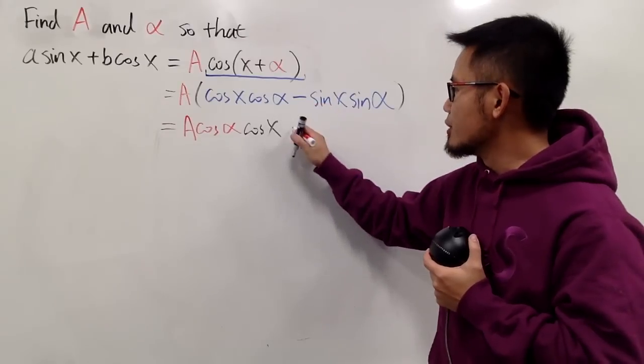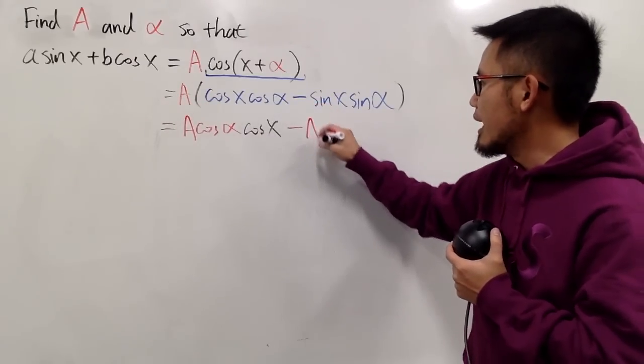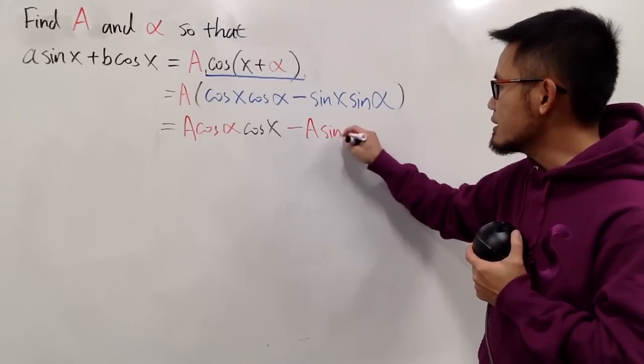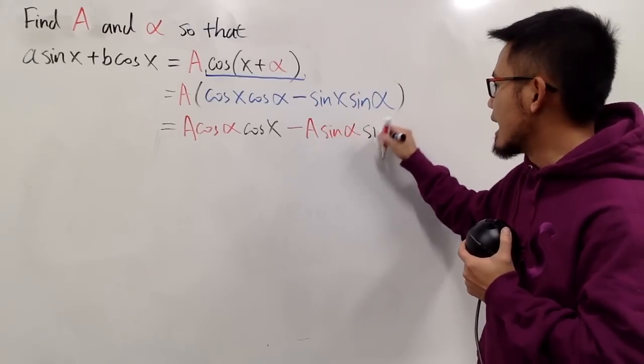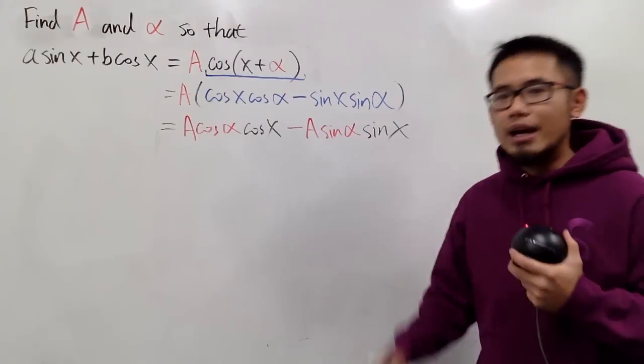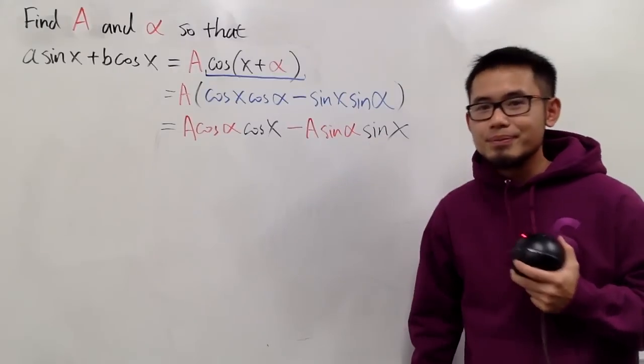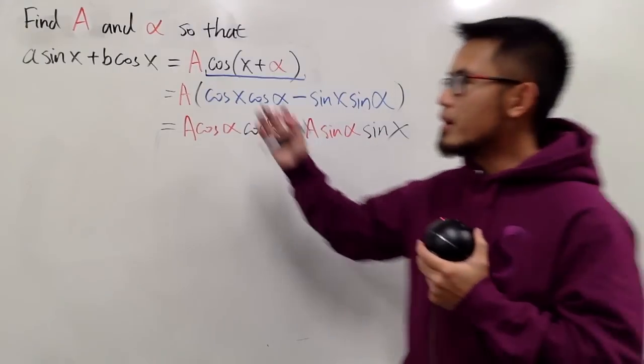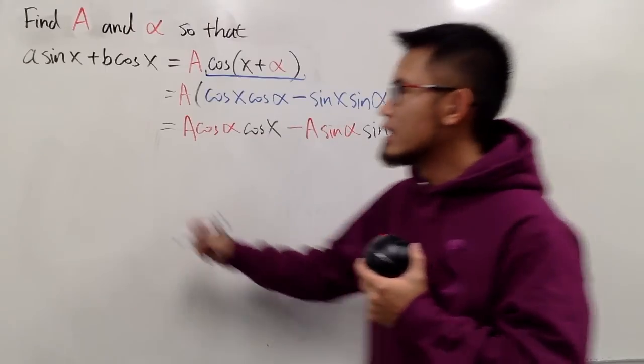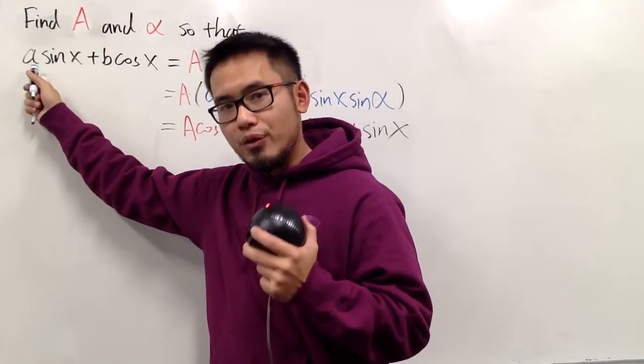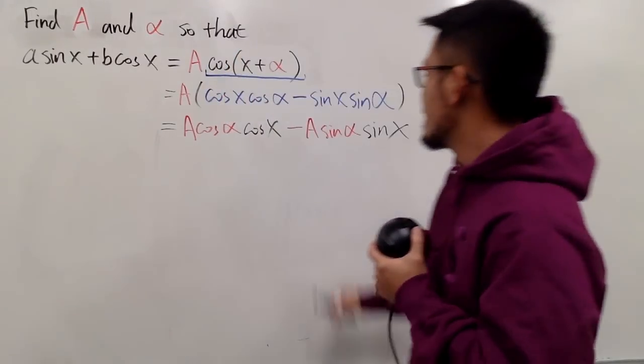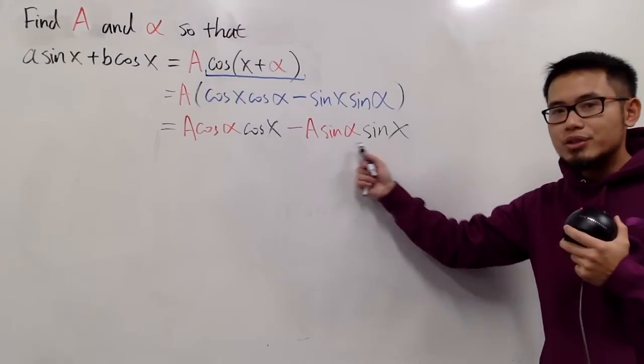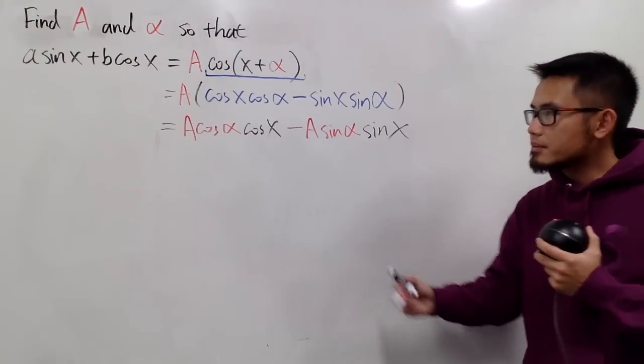And then, this is going to be a minus A times this, so I will put down A, and I will write down sine alpha first, and then sine x. And why did I do this? Well, if you compare the left-hand side and the right-hand side, this is the coefficient of sine x.